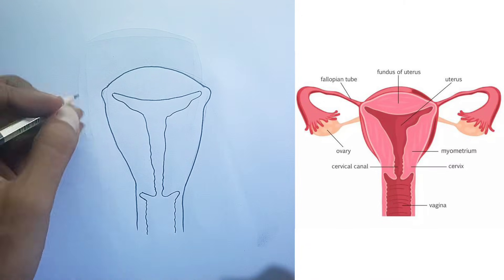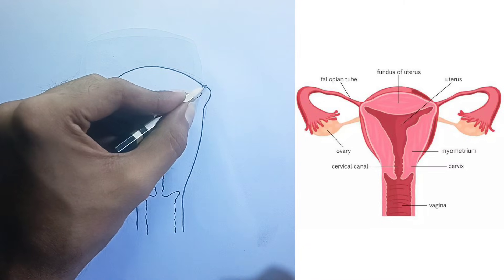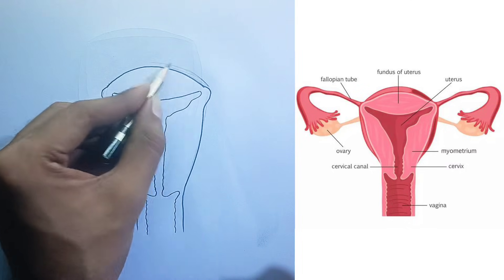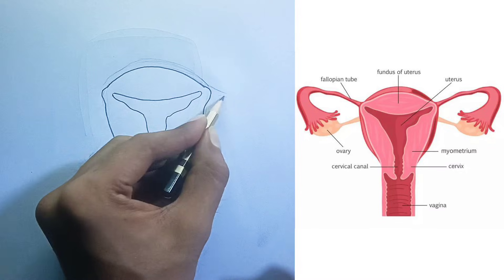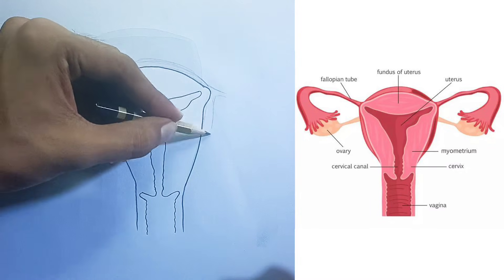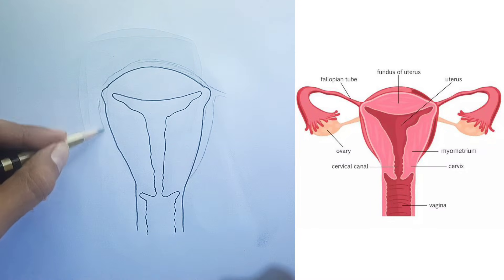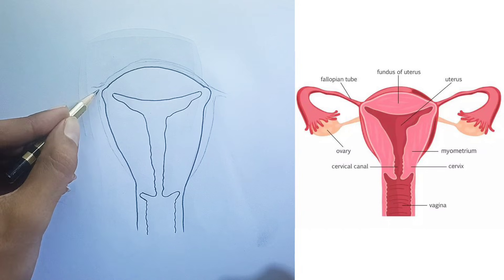Cervix. This is the lower, narrow part of the uterus that forms a canal connecting the uterus to the vagina. It acts as a gateway, allowing sperm to enter the uterus and menstrual blood to exit. During childbirth, the cervix dilates to allow the baby to pass through.